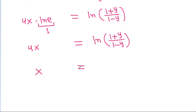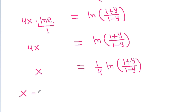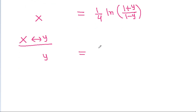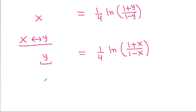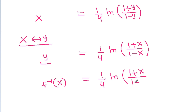So x = (1/4) · ln((1 + y)/(1 - y)). Interchanging x and y, f inverse of x = (1/4) · ln((1 + x)/(1 - x)).